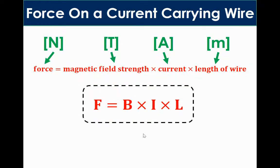It is given to you on the equation sheet, but it's really easy to remember because it spells out BIL. F equals BIL. F is force, measured in newtons. B is magnetic field strength, although sometimes it will be called flux density. So you just need to remember that flux density means field strength.